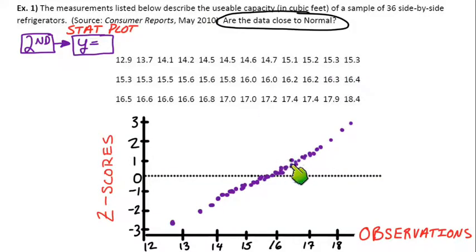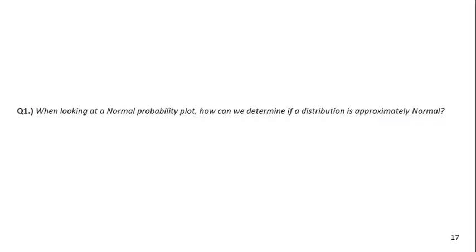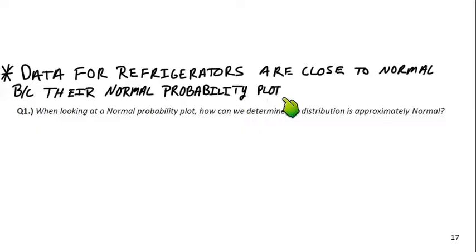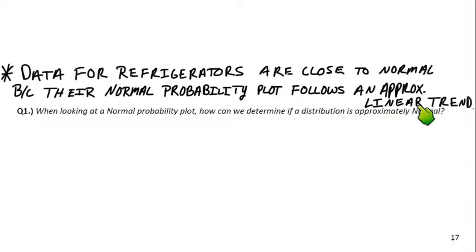If it follows a linear trend, that's a good indicator that this is actually normally distributed data. So we just use our calculator to make a normal probability plot. We look at it, and if it follows a linear trend, then it's approximately normal. If you see any curves, any weird stuff going on, that would indicate that it's not normal. So to answer the question, in context, the data for refrigerators are close to normal or approximately normal because their normal probability plot follows an approximately linear trend.